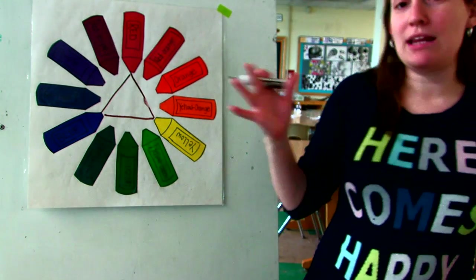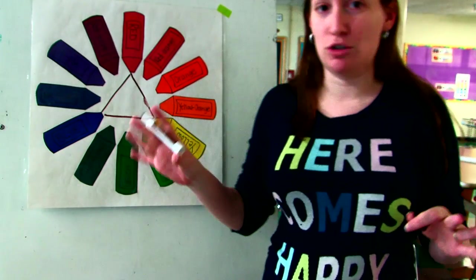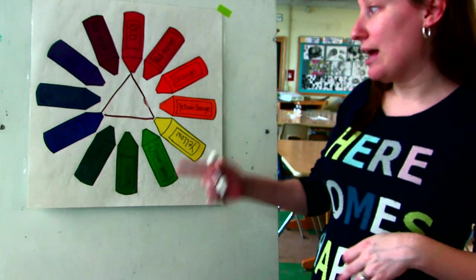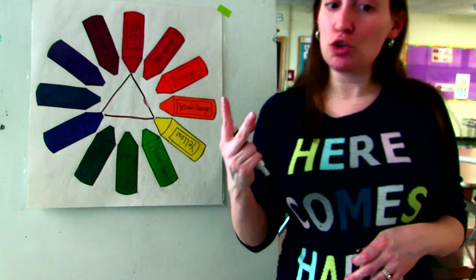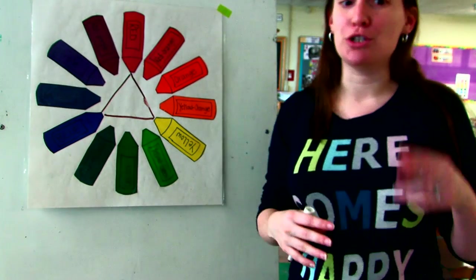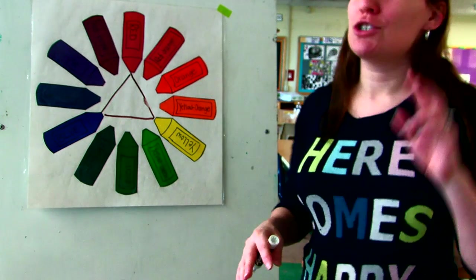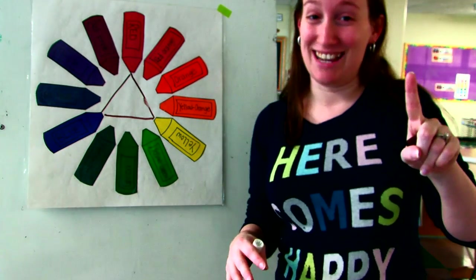Again, you can't create them from anything. You can't mix two colors to create primary colors. However, you can mix two primary colors to create your secondary colors. Correction: two primaries together equals one secondary.